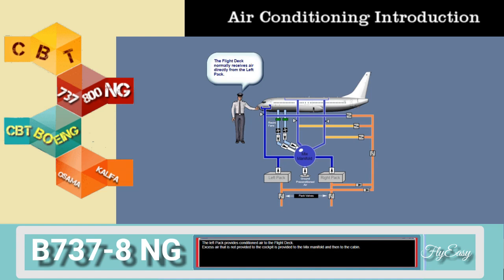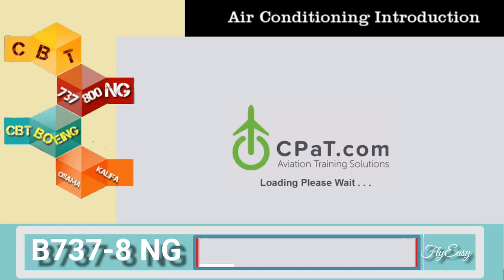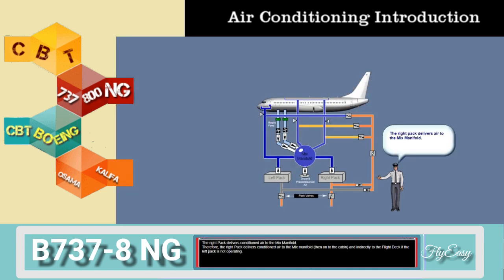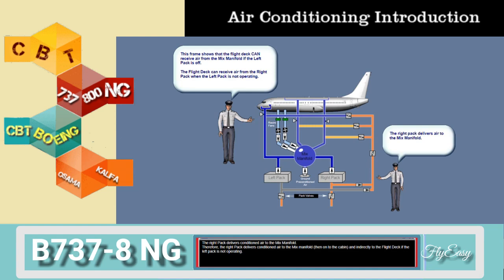The left pack delivers conditioned air to the flight deck. Excess air that is not provided to the cockpit is provided to the mix manifold and then to the cabin. The right pack delivers conditioned air to the mix manifold and then to the cabin, and indirectly to the flight deck if the left pack is not operating.